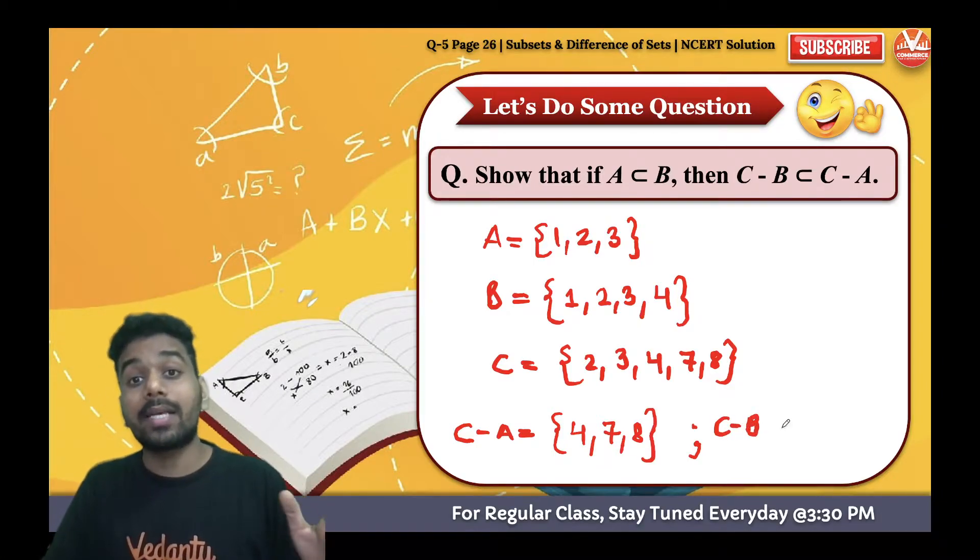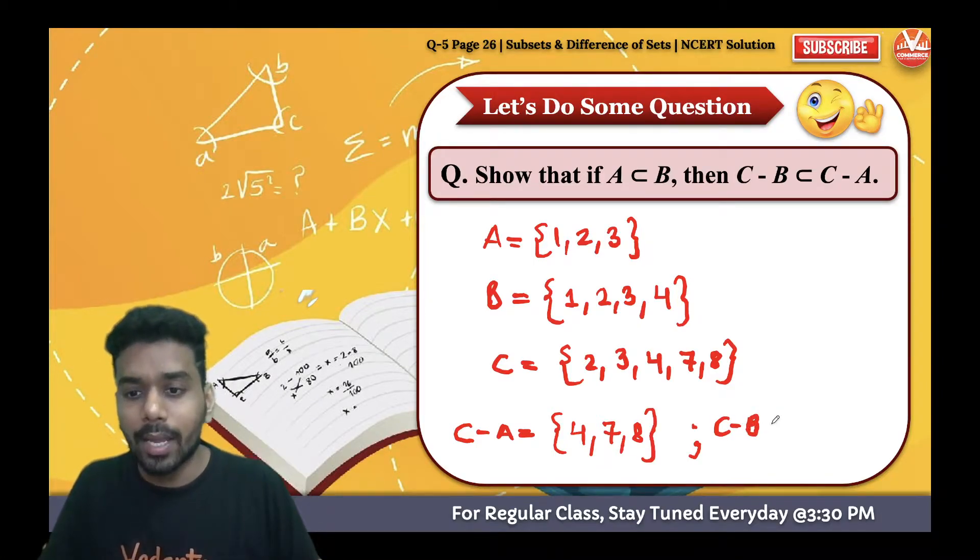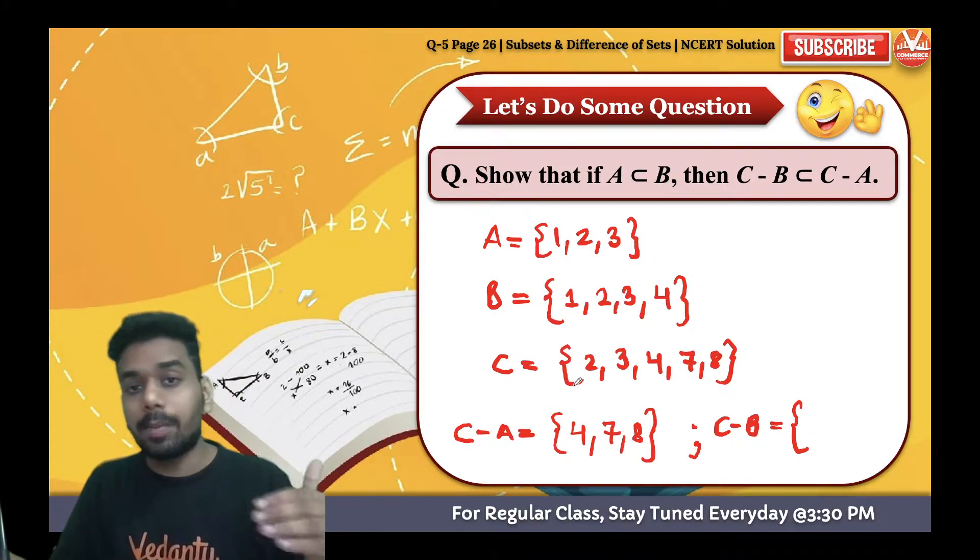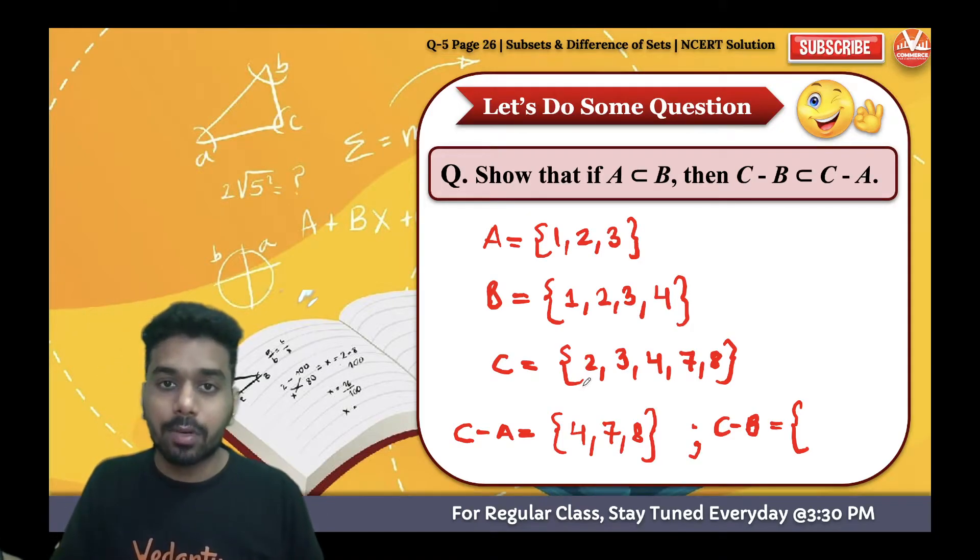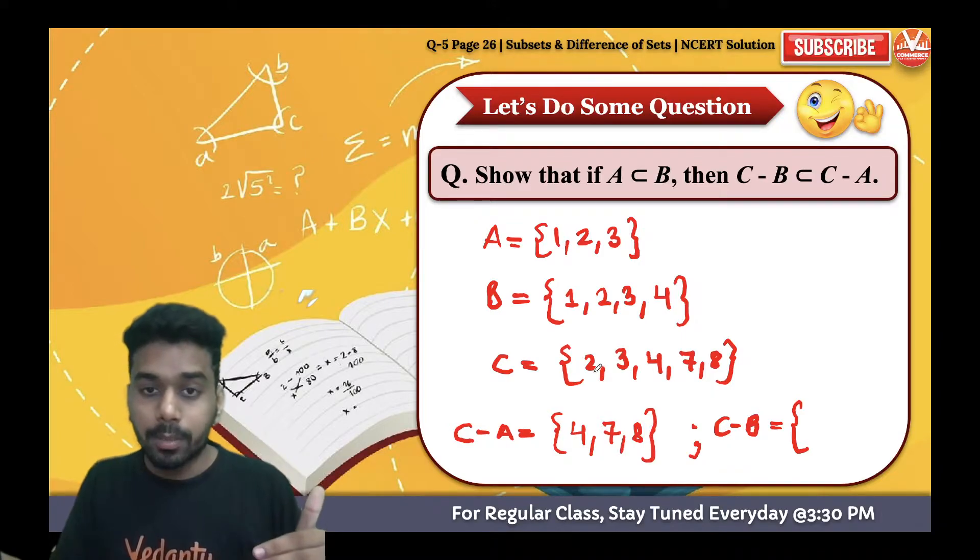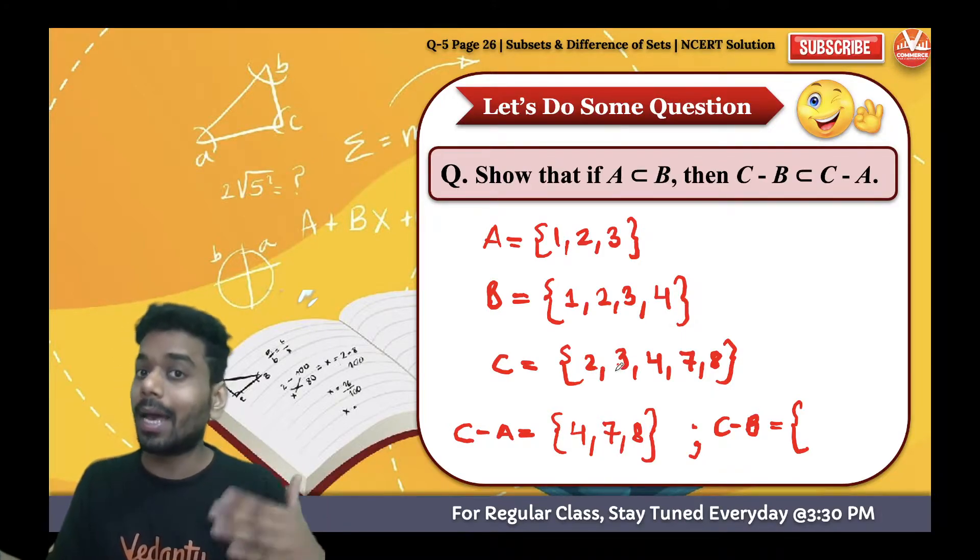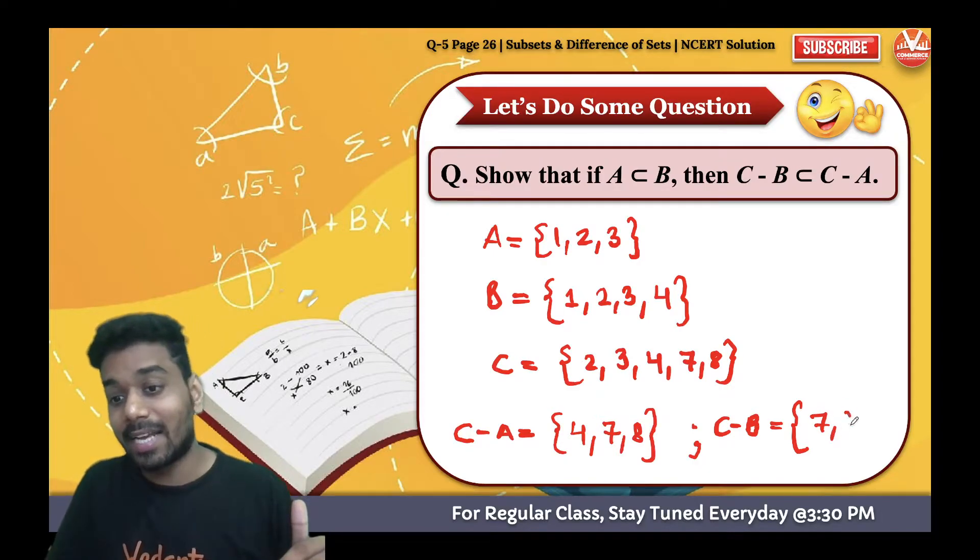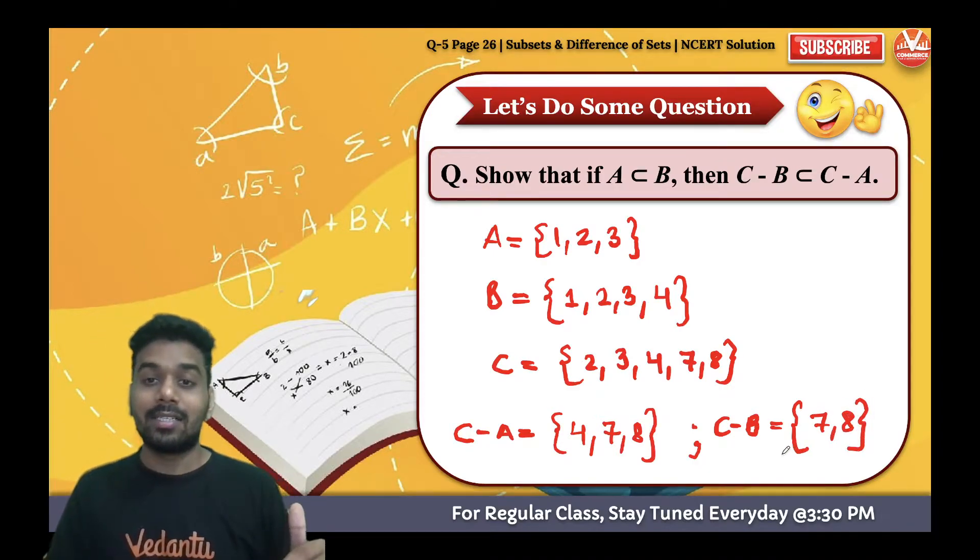Similarly, C minus B, C minus a bigger set in comparison to A, definitely you are going to have a smaller set. So C minus B means remove all the elements from C which is also in B. So 2 is in B? Yes, eliminate. 3 is in B? Eliminate. 4 is in B? Eliminate.